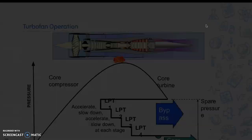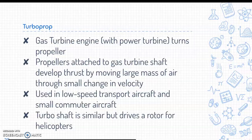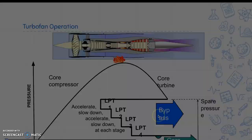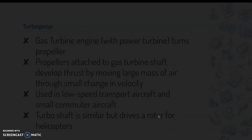Looking at turbofan operation, a graph compares turbofan performance dependent upon pressure and altitude. Note that the bottom of the graph was cut off in the slide, but this will be made available in the classroom so you can view it more thoroughly.